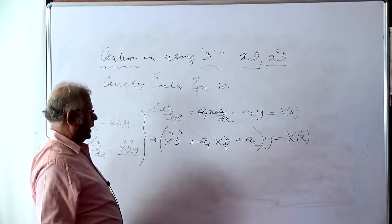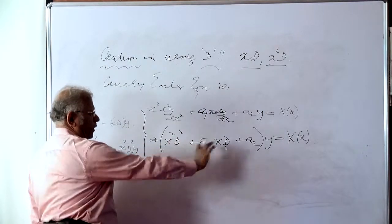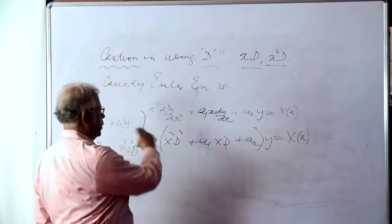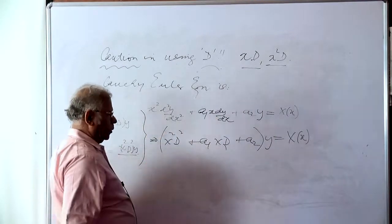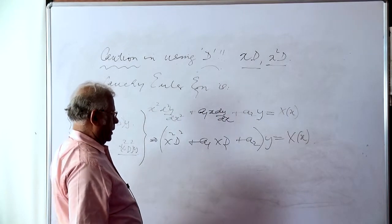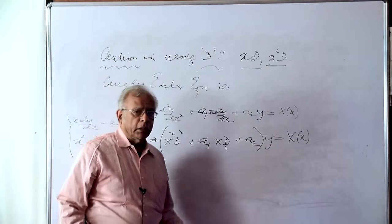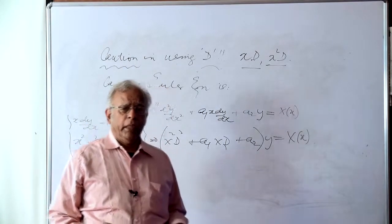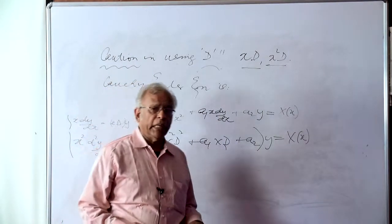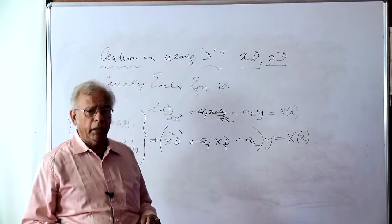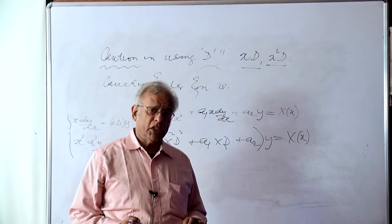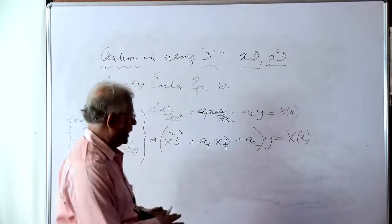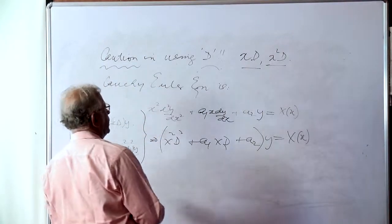This is condensing the equation into a symbolic form. The d operator condenses, compacts a particular equation into a symbolic form, which is easier to deal with. Now, I will take a very simple example and demonstrate how algebraic identities may not apply to a combination of xd as factors. Let us see that. We will take a very simple example.